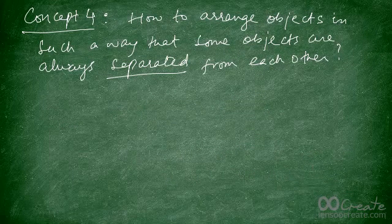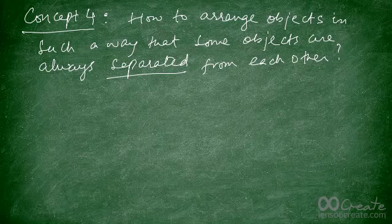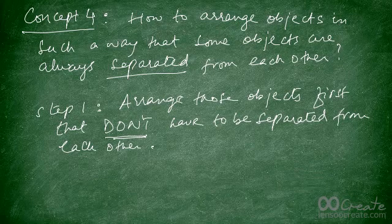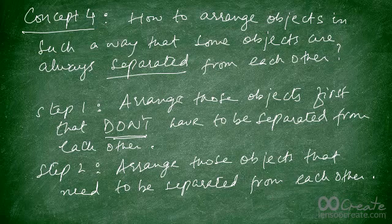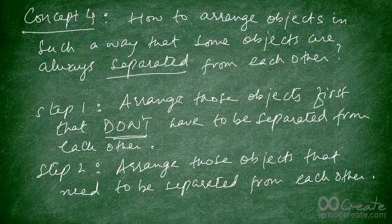The next concept we will learn is how to arrange objects such that some of the objects are always separated from each other. In a certain way, this is the opposite of what we just learned, but there's a different technique for solving this. The first step is to arrange those objects that don't have to be separated. Step two is to arrange those objects that need to be separated.